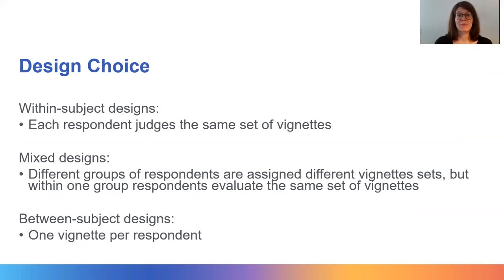Once the vignette universe has been created, it must be decided whether a respondent should answer only one vignette or several. Designs with only one vignette are called between-subjects designs. In within-subjects designs, each respondent evaluates all of the vignettes in the sample. In mixed designs, different groups of respondents receive the same vignettes. Between-subjects designs minimize learning or fatigue effects but require a larger number of respondents to achieve enough statistical power than within- or mixed designs. For larger vignette samples, a within-subject design is not advisable as respondents could be overburdened.